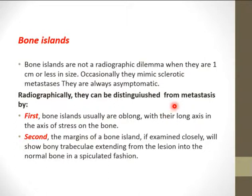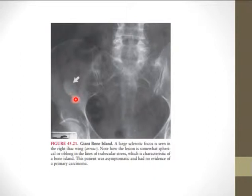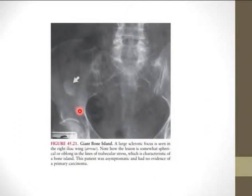Bone islands are usually not a diagnostic dilemma when less than 1 cm, but when large they can be mistaken for sclerotic metastasis. They are always asymptomatic. To differentiate from metastasis: bone islands are usually oblong or oval shaped with the long axis in the direction of bone stress, and their margins show bone trabeculae extending from the lesion into normal bone in a spiculating fashion — they merge with adjacent bone rather than destroying it.